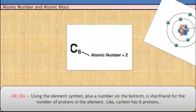Using the element symbol plus a number on the bottom is shorthand for the number of protons in the element. Like, carbon has 6 protons.